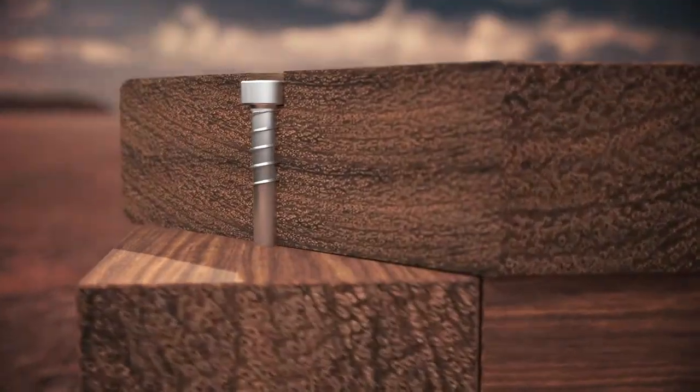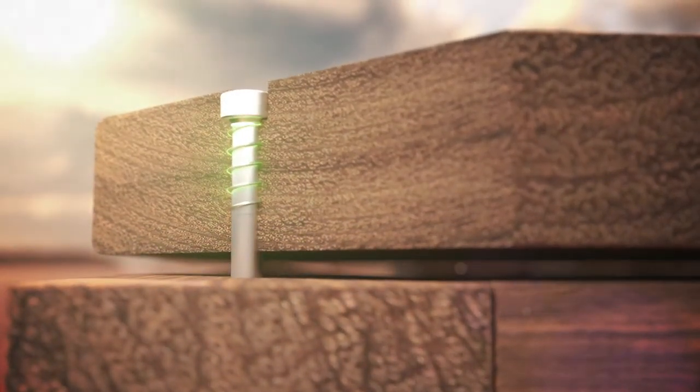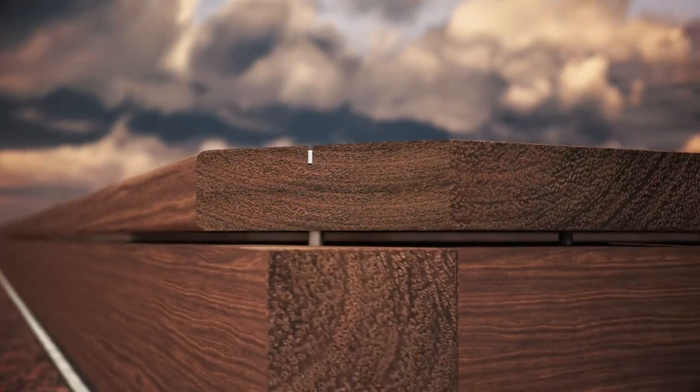Wood shrinks in hot and dry weather. This creates a gap between the decking board and the support frame. Thanks to the double-thread technology, boards are locked tightly in place.